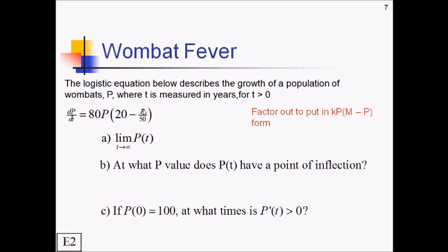We're going to start by factoring out whatever we need to to put this in the true kP M minus P form. So to get P over 50 to be P, I would have to factor a 1 fiftieth out of all of this. If I take out a 1 over 50 on the outside, that's just going to be 80 over 50 P. And on the inside, obviously, this will be P. That's what we were trying to do all along, but this 20, what's 20 if I factor a 1 fiftieth out of it? Well, if I factor out a 1 fiftieth, I'm really dividing 20 by 1 fiftieth, which means I'm really multiplying 20 by 50. So this is going to be 1,000 minus P inside. So now we've got it in that form that we like to use, and we're going to go through and try these questions. So just for kicks and giggles here, pause the video and see how many of these you can figure out on your own based on what you've learned so far.